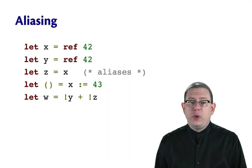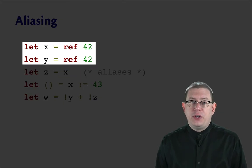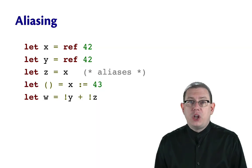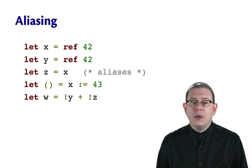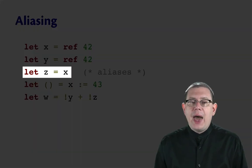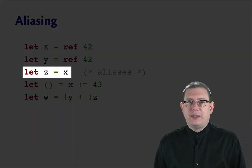So for example, we could create two refs, both initially storing the contents 42, bind one to x and one to y. So now we have two distinct locations in memory. If we say let z equal x, z and x are now aliases. They both point to the same location in memory.